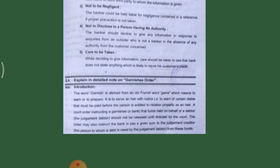The court order instructs the Garnishee — that is, the bank — that funds held on behalf of the debtor, that is the judgment debtor, should not be released until directed by the court. Until the court says so, they should not give any amount to that person.